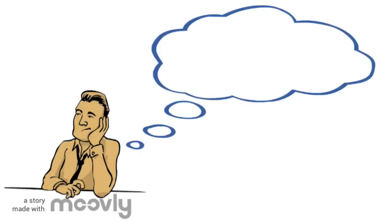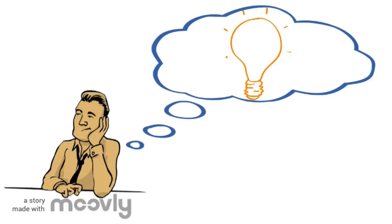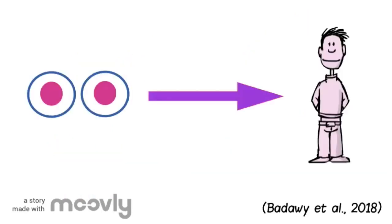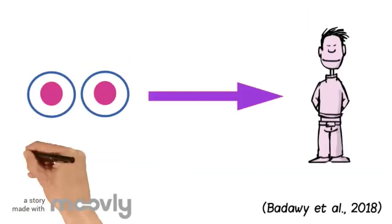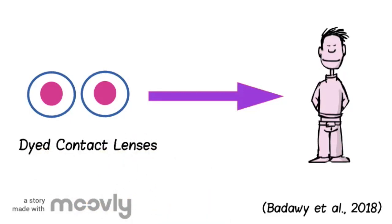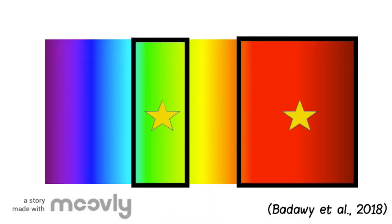Did you know that there are aids available to help those that are colorblind? Although these products are not capable of enabling you to perceive color the same way as a person without this condition, they help differentiate shades. A lab at the University of Birmingham has developed dyed contact lenses that allow for better differentiation between red and green colors.